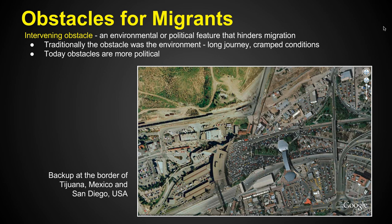Traditionally, the obstacle was the environment. For example, if you had a long journey, you might have to cross an ocean or mountains and we didn't have the infrastructure to get you through those conditions very quickly. Maybe there was a very cramped scenario where you're on a ship for weeks or months at a time. So your obstacle was the distance. Today, the obstacles are more political, like borders.